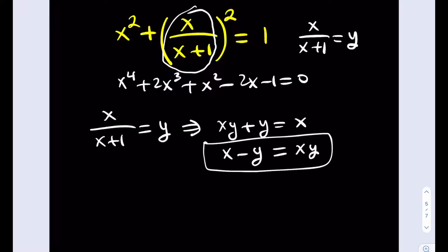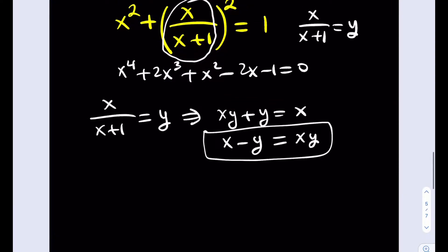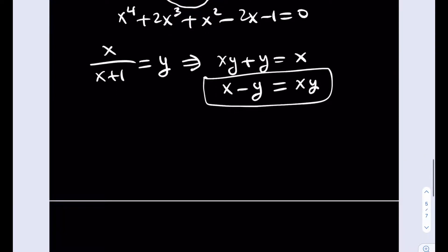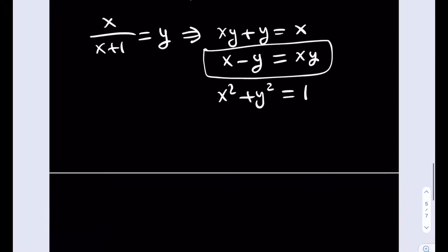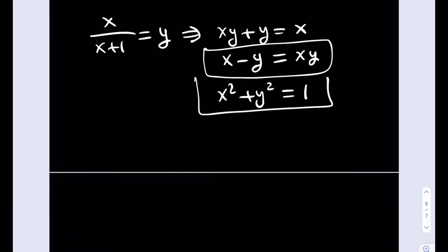And the other equation is going to come from the fact that we use substitution. And it's going to look like this: x squared plus y squared equals 1. Because we named this whole thing y, we're going to be getting a system of equations like this one. Pretty interesting, right?